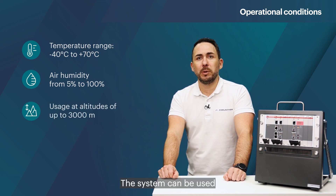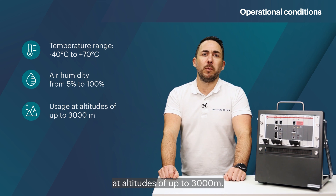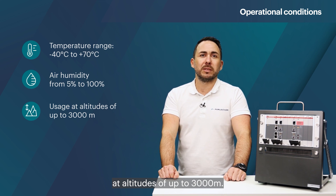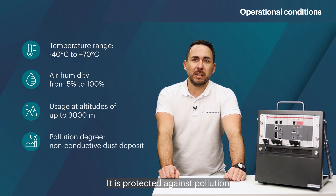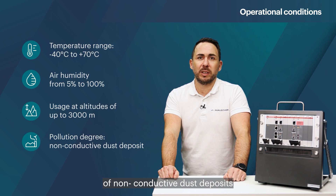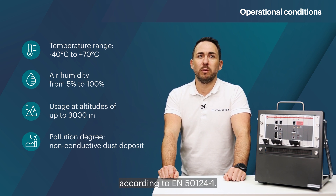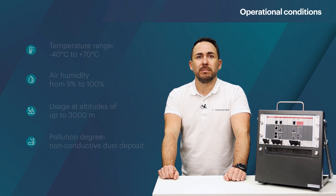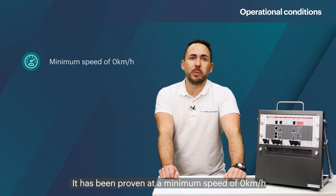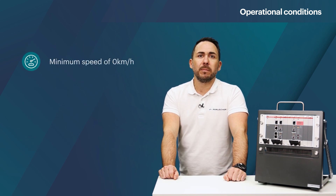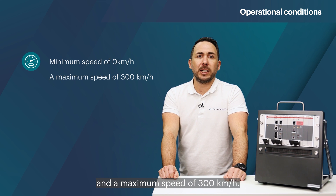The system can be used at altitudes of up to 3000 meters. It is protected against pollution of non-conductive dust deposits according to EN 50125-1. It has been proven at the minimum speed of 0 km per hour and a maximum speed of 300 km per hour.